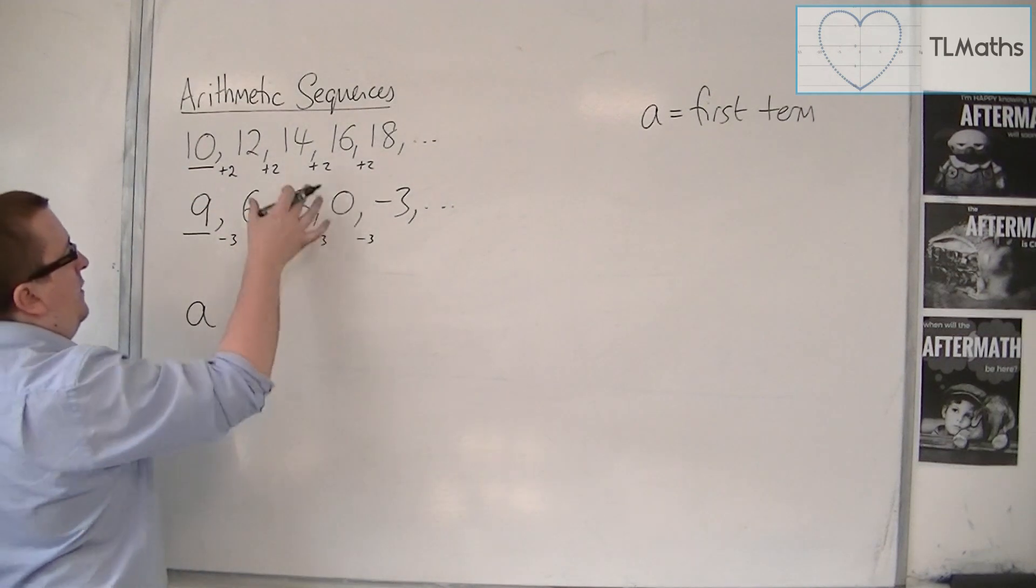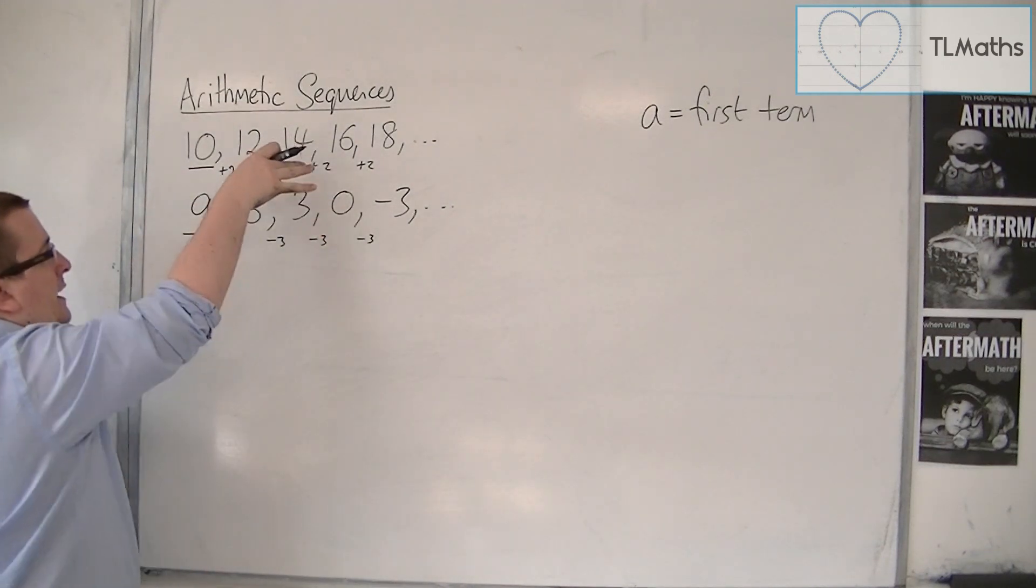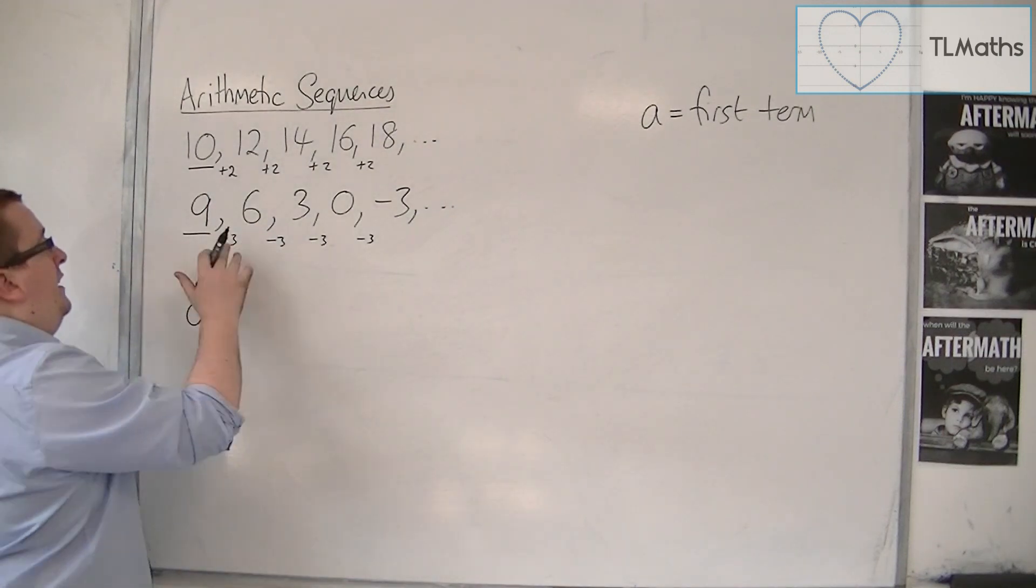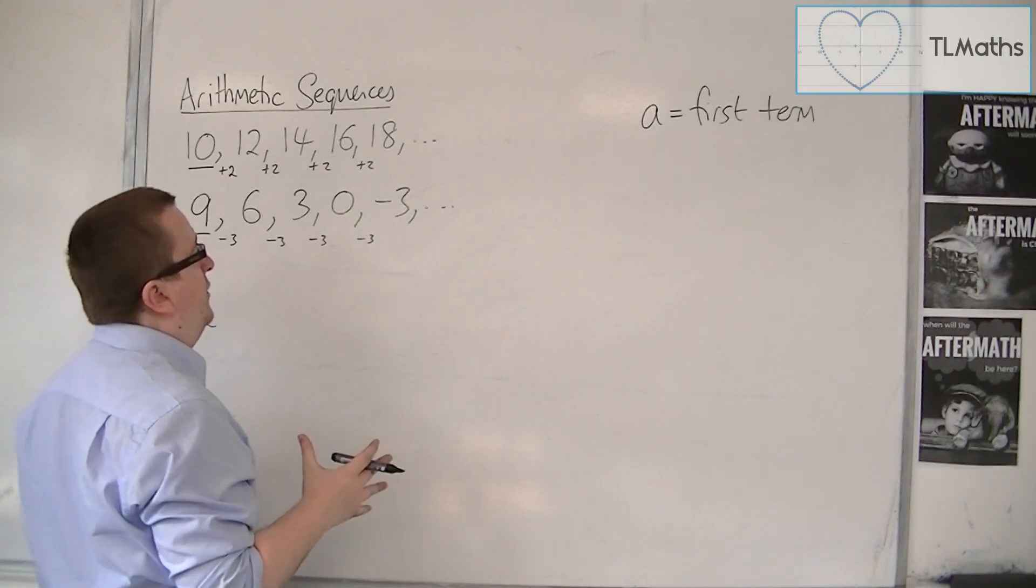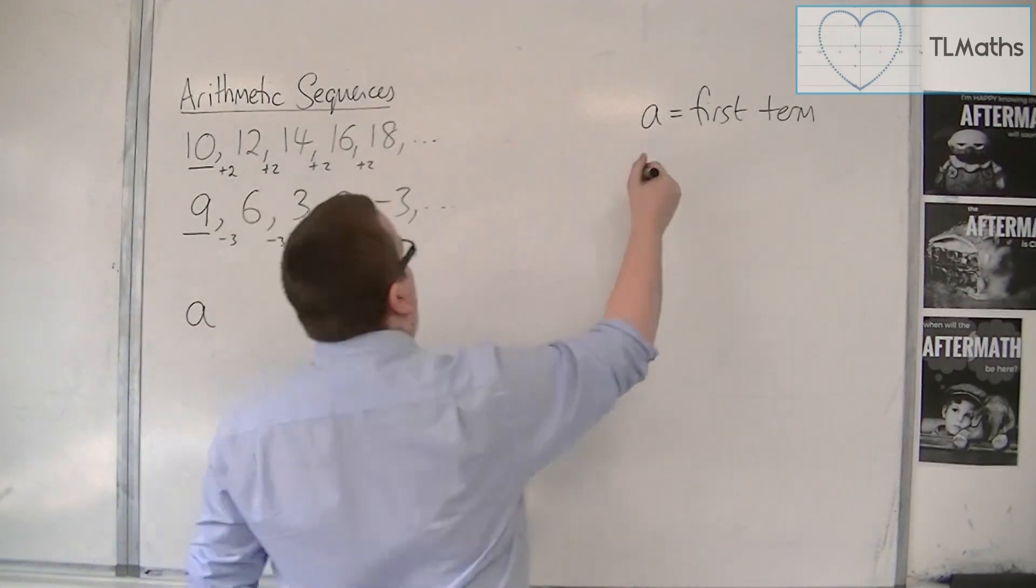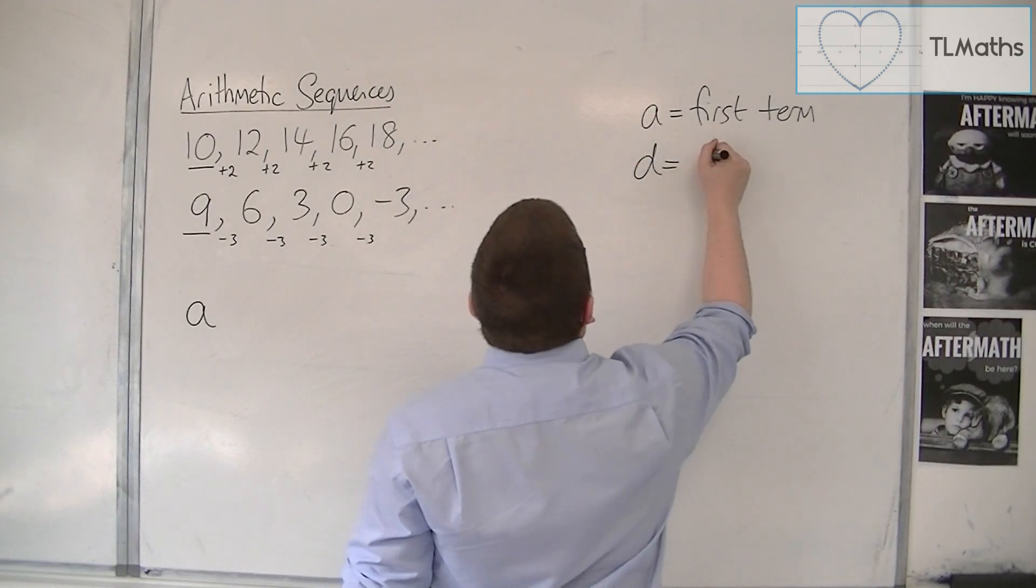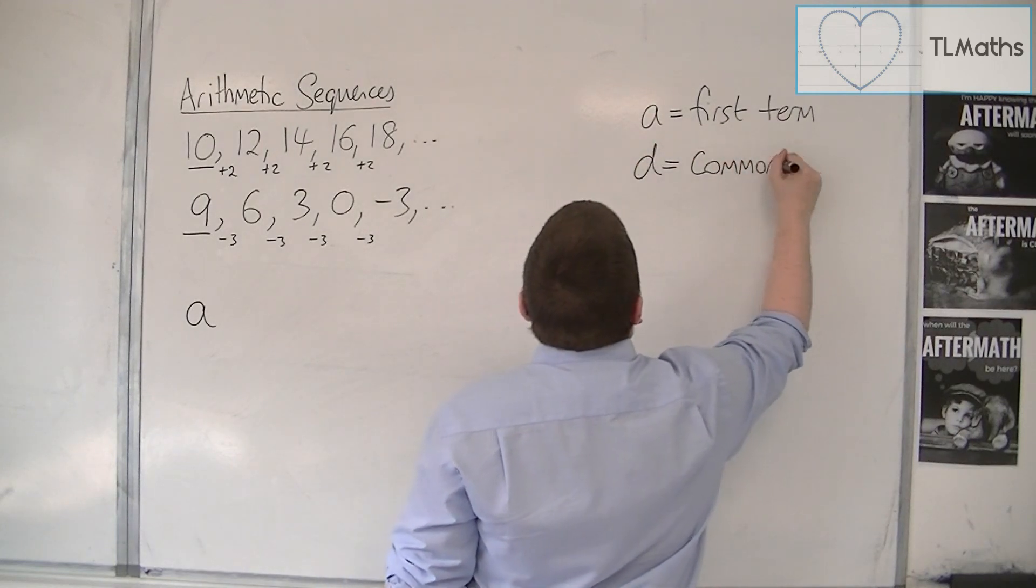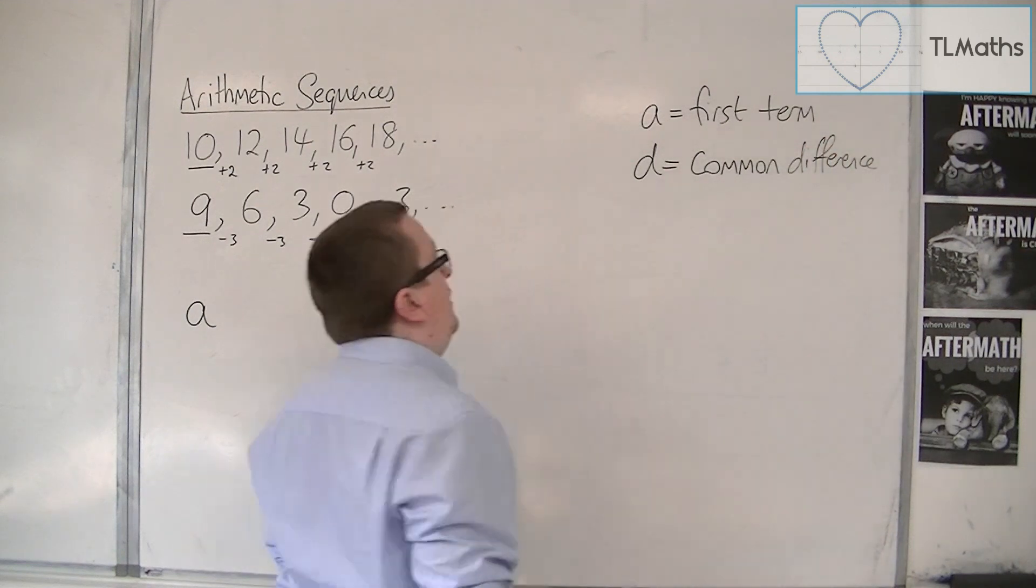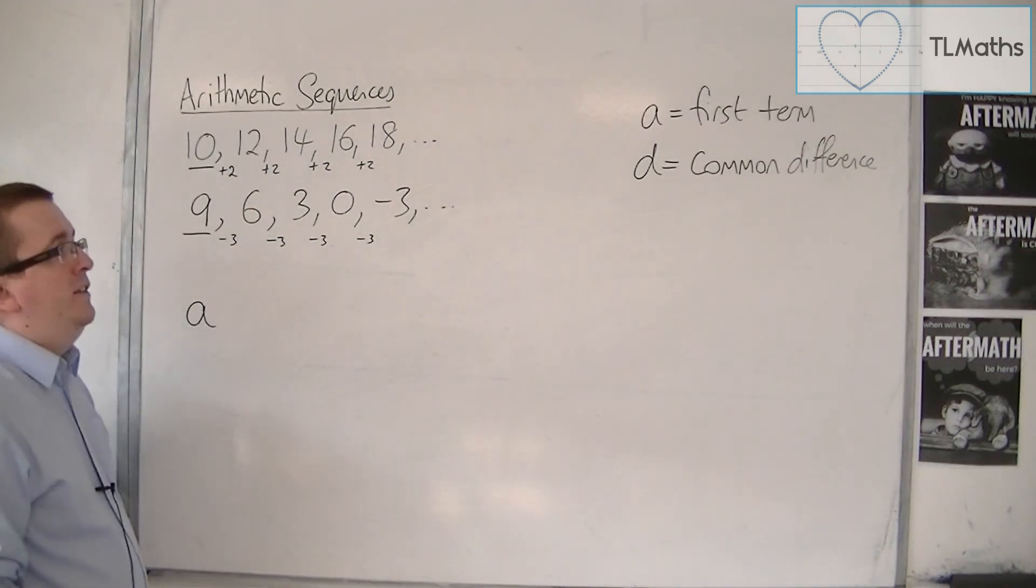So let's say that this is the difference between each term. And because it is common to all the terms, we're going to call this the common difference. So let this be D. So we've got A as being the first term and D being the common difference.